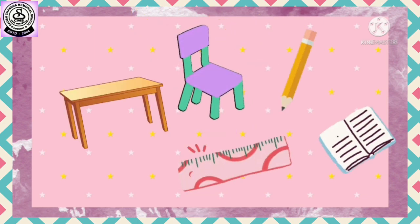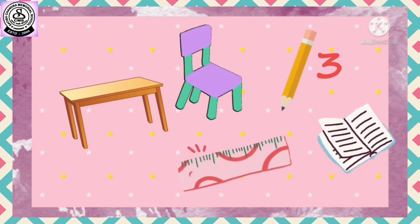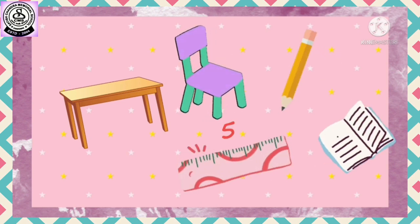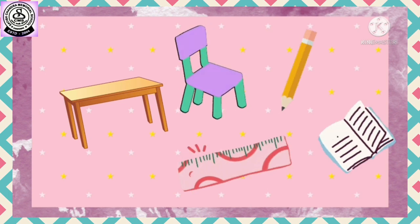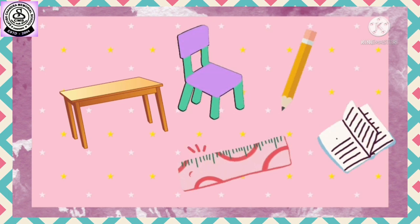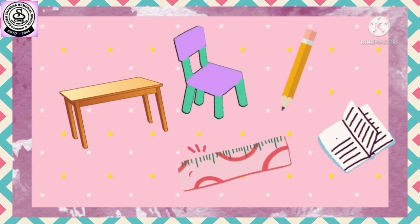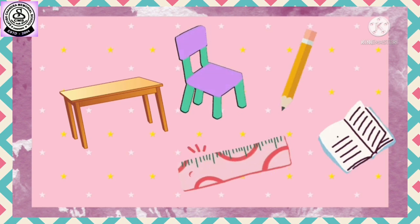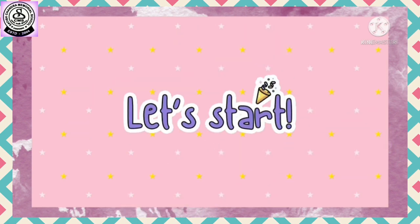See here — how many objects are there? One, two, three, four, and five. What are the objects? Table, chair, pencil, copy, and scale. Now I'm giving only 10 seconds. Let's start!